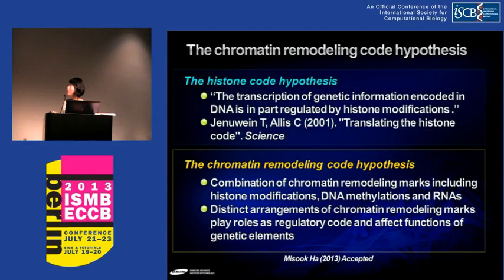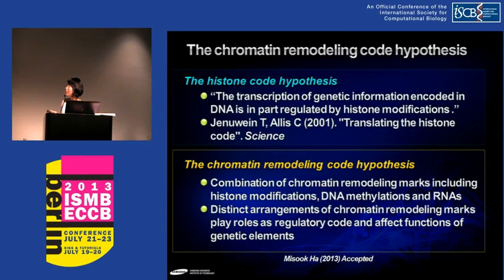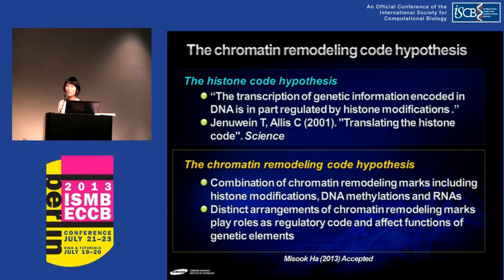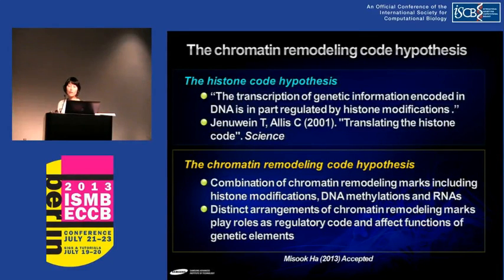Based on previous studies, we suggest the chromatin remodeling code hypothesis. This is not a new hypothesis — previously, Dr. Allis's lab suggested the histone code hypothesis. From their hypothesis, the presence of specific histone modifications affects gene expression. As well as histone modification, DNA methylation, small RNA, and various chromatin remodeling marks are co-ordinated, and their distinct arrangement and combination can be a platform restricting interaction between transcription factors and genes.